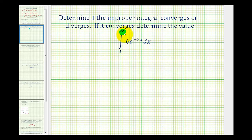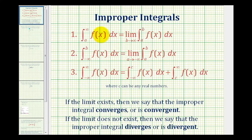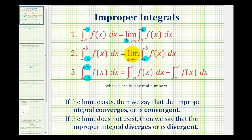Let's do a quick review of improper integrals and then we'll come back to this example. Notice these integrals on the left are all improper because the limits of integration involve positive or negative infinity. Looking at number one, we want to replace infinity with B and then take the limit as B approaches infinity of the integral. For number two, we want to replace negative infinity with A and then take the limit as A approaches negative infinity of the integral.